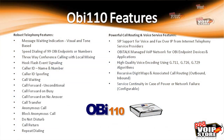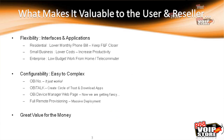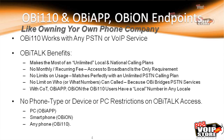The OBi110 works with any PSTN or VoIP service. It can actually have up to two SIP trunks and act as a gateway with those. It makes the most of your unlimited local and national calling plans because you can make a call out of your OBi110. There are no monthly recurring fees — the only requirement is a broadband connection, and there are no limits on usage. It matches perfectly with unlimited PSTN calling plans, and there's no limit on who or what numbers can be called because the OBi bridges PSTN services.